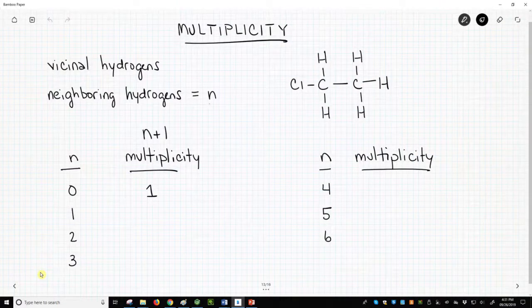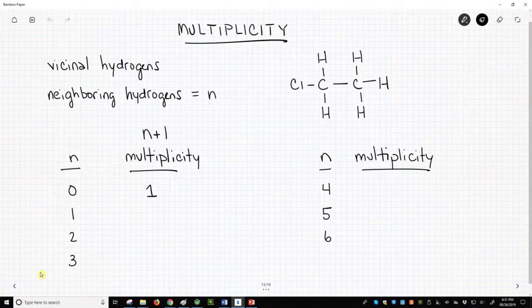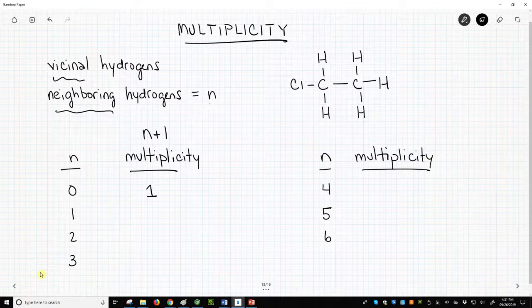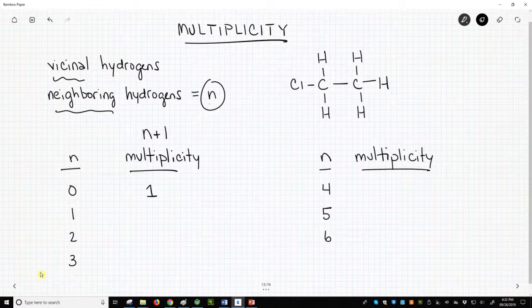To understand the idea of multiplicity, we first need to understand the idea of neighboring or vicinal hydrogens. We'll call vicinal hydrogens or neighboring hydrogens N. Vicinal hydrogens are attached to an adjacent carbon.